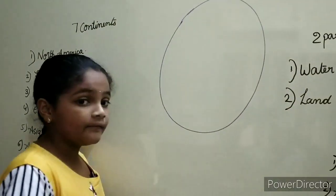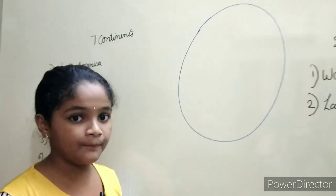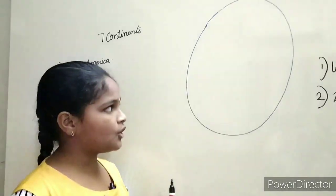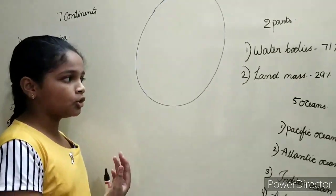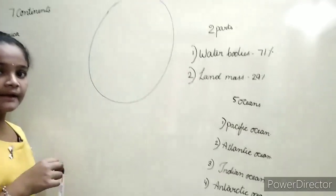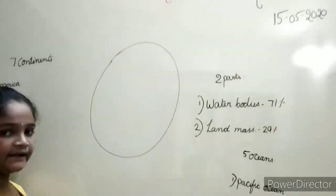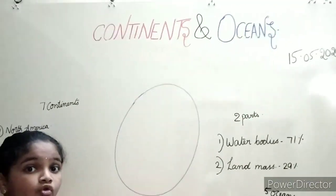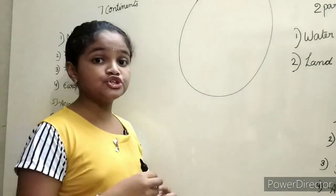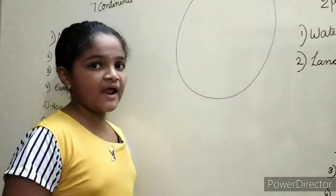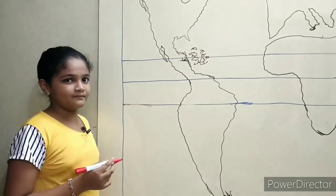The earth is in spherical or geoid shape, so we cannot see all the oceans and continents at a time. For our convenience, geographers draw a flat map.